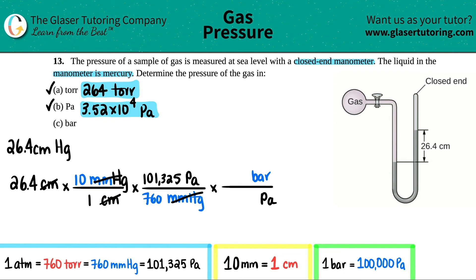One bar, so one goes on the top, equals 100,000 pascals, so 100,000 goes on the bottom. Pascal cancels out. Starting from left to right it would be 26.4 times 10 times 101,325 divided by 760 and then divided by 100,000. Three sig figs, so you get 0.352 bar, and that's the answer to the final one.